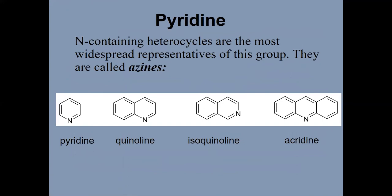Pyridine. Nitrogen-containing heterocycles are the most widespread representatives of this group. They are called azines. Examples include pyridine, quinoline, isoquinoline, and others.